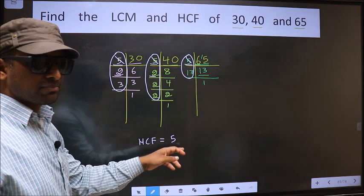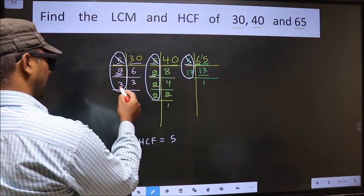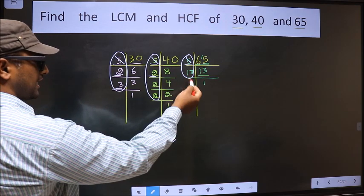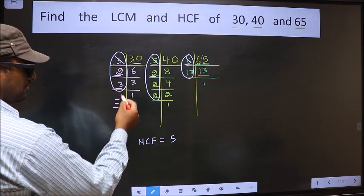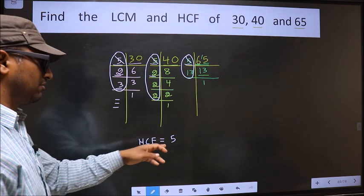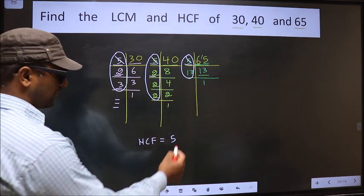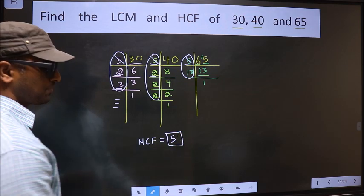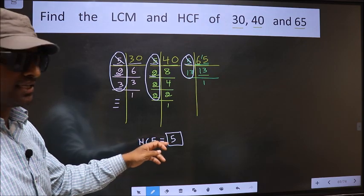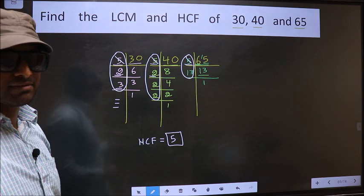To write a number here, that number should be present in all the 3 places. Next number 3. Do we have 3 here? No. No need to check in the other place. No more numbers have been left. Therefore, we got only one number 5 present in all the 3 places. So 5 itself is our HCF.